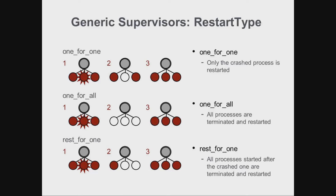Finally, there's the rest-for-one strategy. In rest-for-one, all processes started after the crashed process are terminated and restarted. We tend to use this strategy if we start processes in order of dependency. There's also the simple-one-for-one strategy, which is used for children of the same type added dynamically at runtime, not at startup.